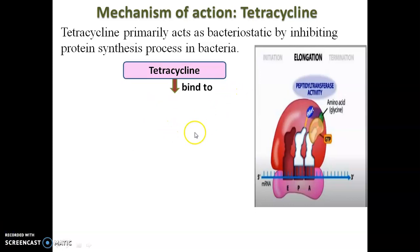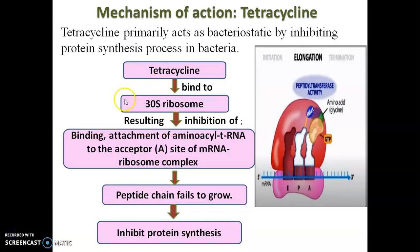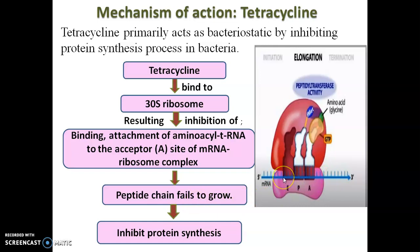Tetracycline binds to the 30S ribosomal subunit, resulting in the inhibition of binding and attachment of aminoacyl-tRNA to the receptor A site. This A site fails to bind with the amino acid, and hence the peptide chain fails to grow because there is no sliding of the amino acid chain toward the next position, thereby inhibiting protein synthesis.